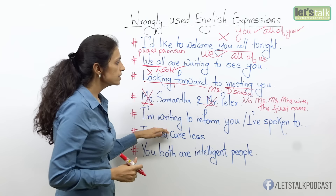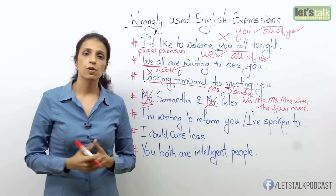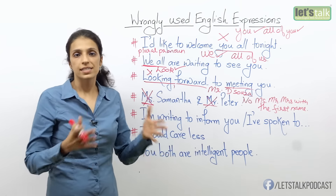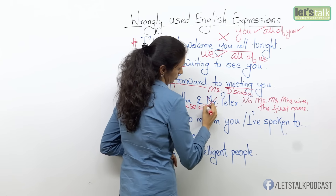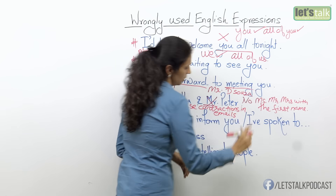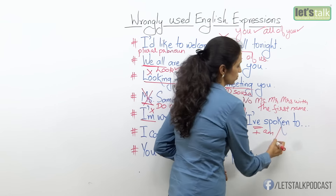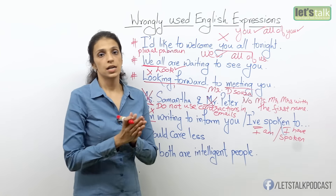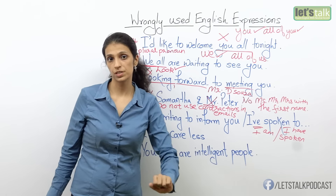The next one: 'I am writing to inform you' or 'I have spoken.' This is absolutely okay when you are speaking, because we speak colloquially — we say 'hi, I'm Rachna.' That is fine in spoken English. But when you write, do not use contractions. No contractions in emails. So you say 'I am writing to inform you,' or 'I have spoken to my team.' Please write the full expression in written English. In spoken English you could say contractions, but in emails, take care.